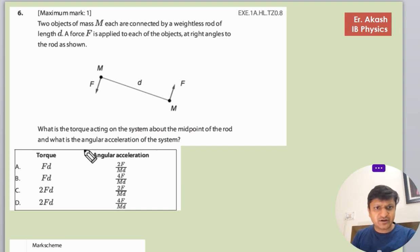What is the torque acting on the system about the midpoint of the rod? So they are rotating about this center. This is d by 2 and this is also d by 2. So what is the torque acting on the midpoint of the rod? And what is the angular acceleration we have to find?